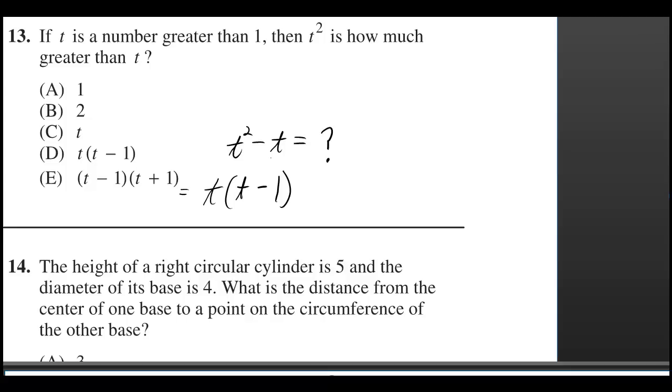And if you take t squared and divide it by t, you get t. And if you take t and divide it by t, you get one. So t times t minus one is our answer.